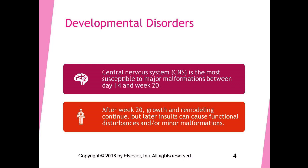The central nervous system is most susceptible to major malformations between day 14 of development and week 20. If a major malformation of the CNS is going to occur, that is usually when it happens. After week 20, growth and remodeling continue but later insults can cause functional disturbances or minor malformations. Some major malformations occurring between day 14 and week 20 make the fetus non-viable, resulting in miscarriage; others allow survival to birth with major malformations.